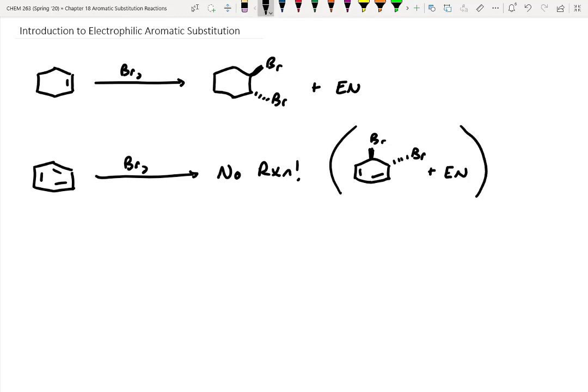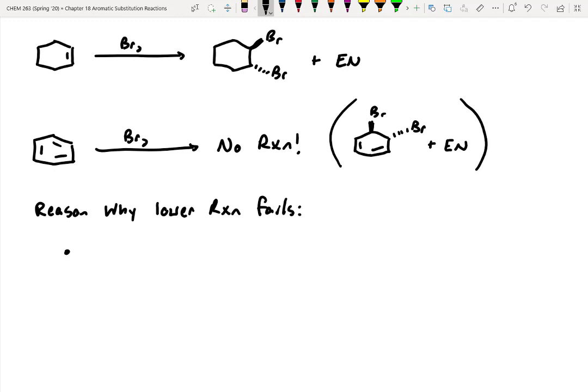So why doesn't this reaction work? Let's come up with a list of reasons why the lower reaction fails. The first reason is the double bonds in benzene aren't true alkenes. If we think about those double bonds in benzene, they're more like a bond and a half due to resonance. Those double bonds can go around the entire ring, so the double bonds in benzene have resonance and are not true alkenes.